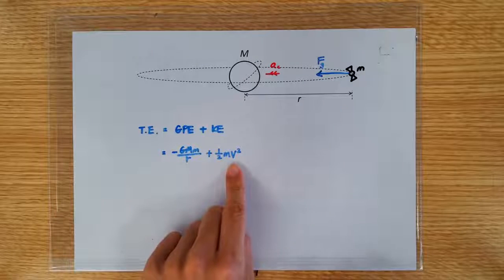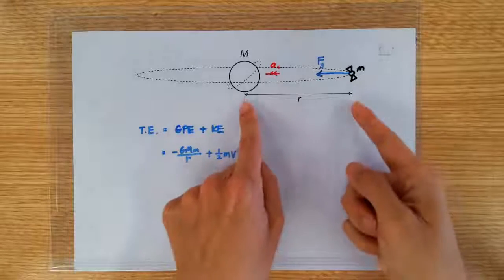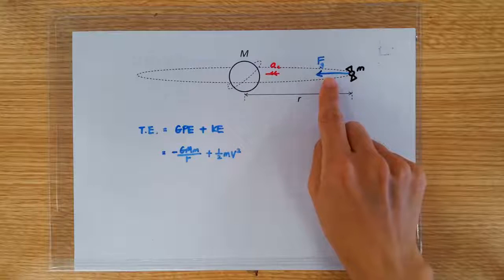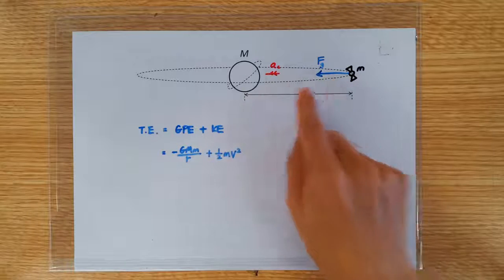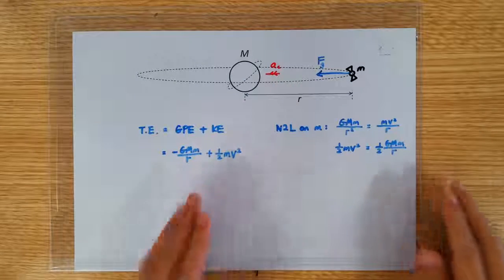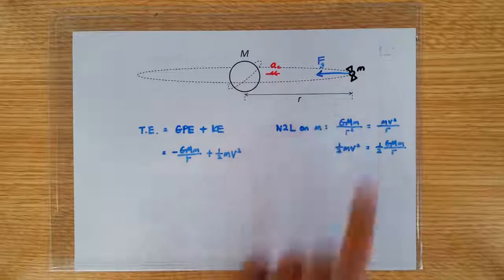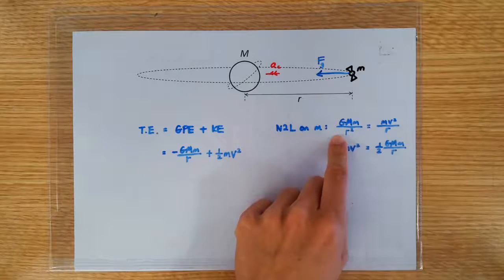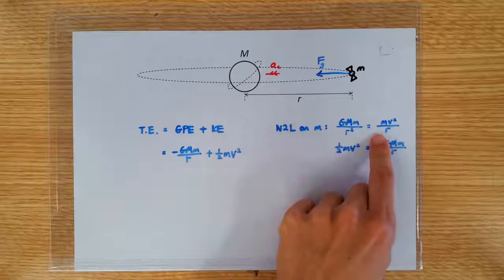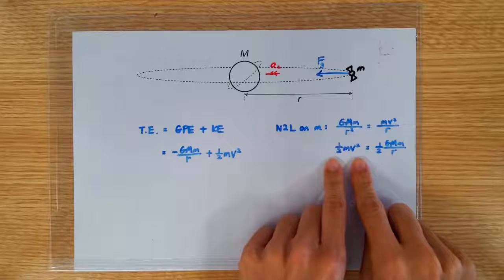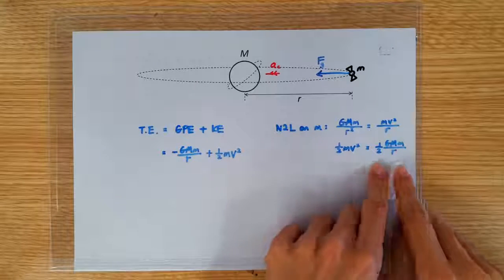The orbital speed of the satellite is, of course, dependent on the orbital radius. This is because the satellite is counting on the gravitational pull of the Earth to provide it with the required centripetal force. So let's take a quick detour to apply Newton's second law on the satellite. The gravitational pull can be written as GMm over R squared, and the required centripetal force is mv squared over R. If we rearrange the equation, we can obtain the expression that the KE of the satellite can be written as half GMm over R.